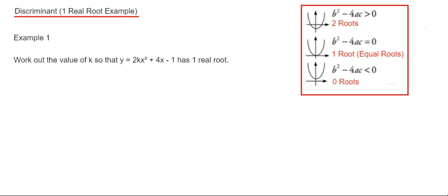Hi guys, I'm going to show you a quick example on working out the value of k in a quadratic equation where we're told that the quadratic has one real root. To do this we need to work out the discriminant and make it equal to zero, because when the discriminant is zero there is exactly one root.